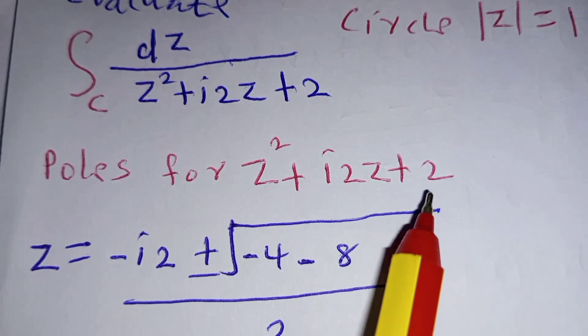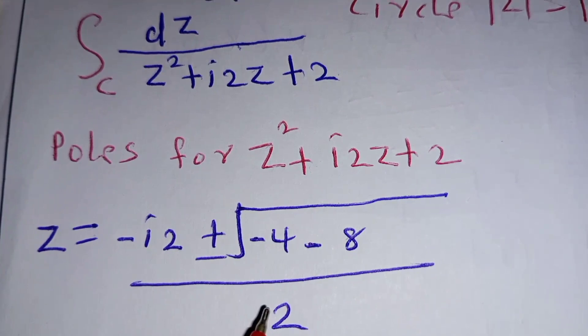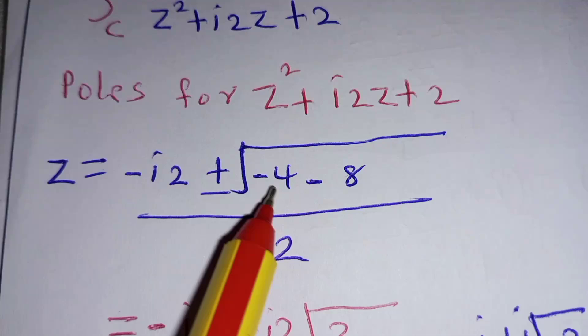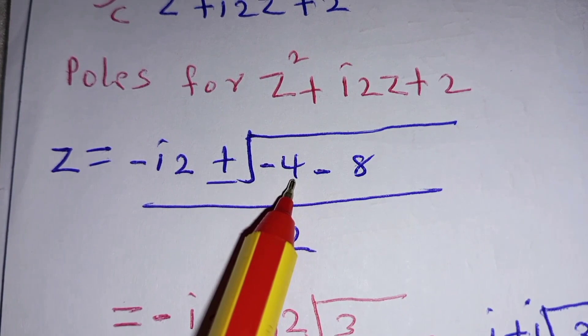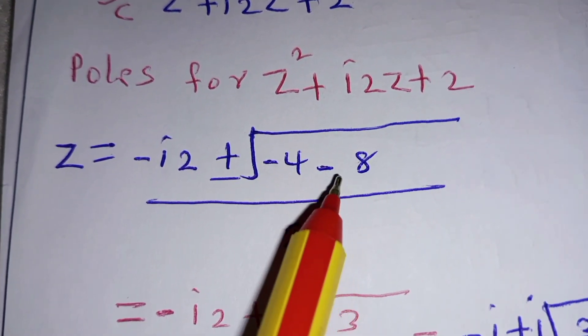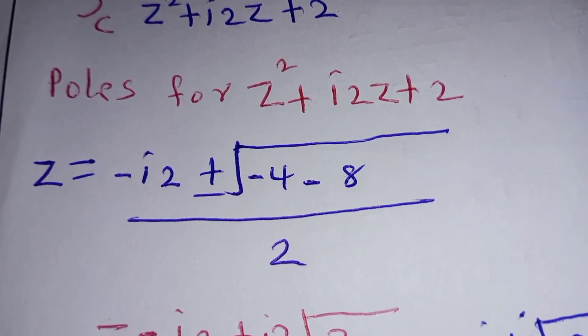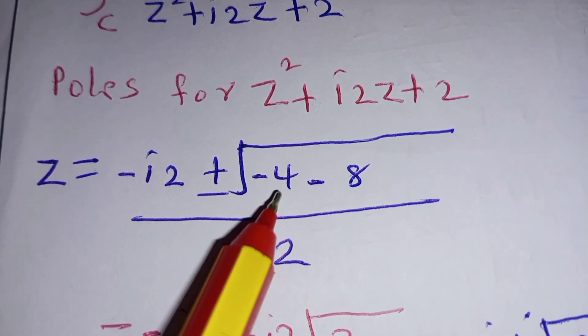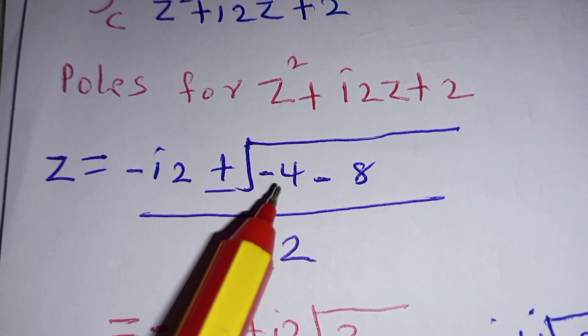Our a is 1, our c is 2, so 2 times 4 is 8. From the quadratic formula, we have negative i2 plus or minus the square root of negative 4 minus 8, which gives us negative 12. Negative 12 is the same as 3 times negative 4.